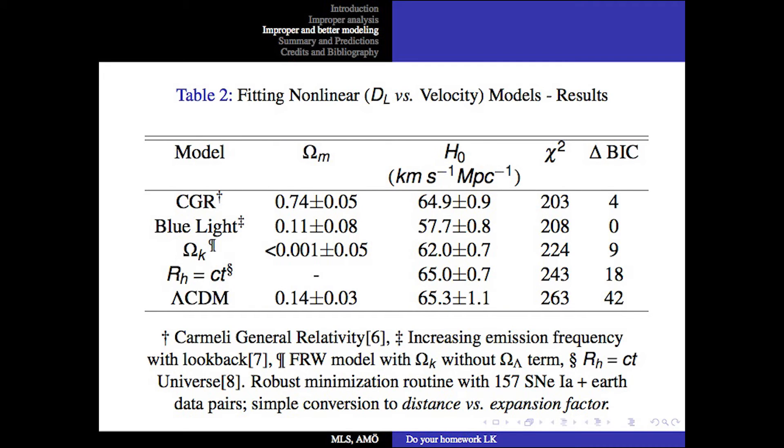Here we fit using non-linear curve fitting techniques. This is the luminosity distance versus the recession velocity. Here are the results. Notice, the best fit is actually a model very infrequently quoted, that is a Carmeli general relativity model. Notice at the bottom row, the lambda cold dark matter model, that is so-called standard model, really is the worst fit according to chi-squared and the delta-BIC. There are many other models better at fitting data when properly analyzed than the so-called standard model.